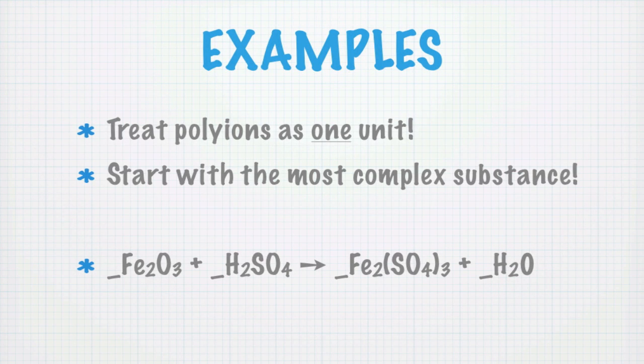Before going on to more complex examples, a couple of important tips. Number one: treat polyions as one unit. When you see SO4, that's its own thing - a polyatomic ion with one S and four oxygens that doesn't change. Number two: start with the most complex substance and work your way back, saving oxygen and hydrogen for last.